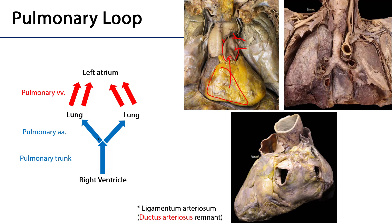That blood is then returned back to the heart via pulmonary veins. These pulmonary veins are going to enter into the left atrium, which we can see here in relation to the base of the heart, and then that blood is going to be sent along through systemic circulation.